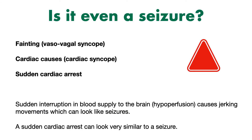The first thing we should consider is: is it even a seizure? It can be quite challenging to recognise a seizure in some clinical situations. Various other medical conditions can cause signs and symptoms that look quite similar to a seizure. If you have a sudden interruption in blood supply to the brain — hypoperfusion — that can result in a loss of consciousness and cause jerking movements of the muscles, which look very similar to seizures. We call these jerking movements myoclonic jerks, which are simply the brain responding to a sudden interruption in blood supply and reduction in oxygen.